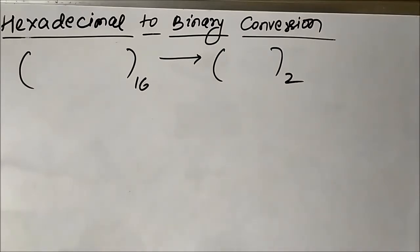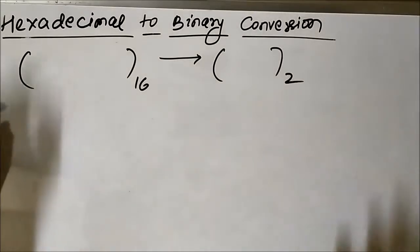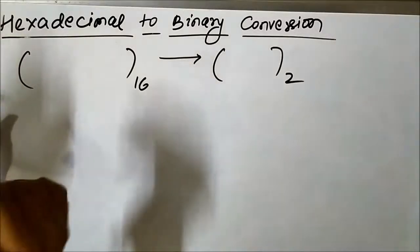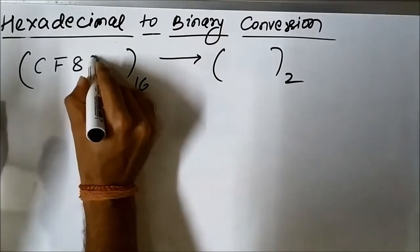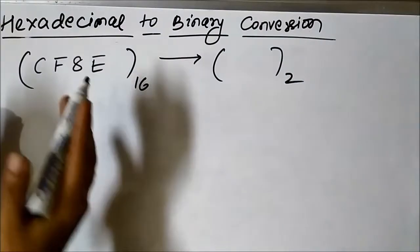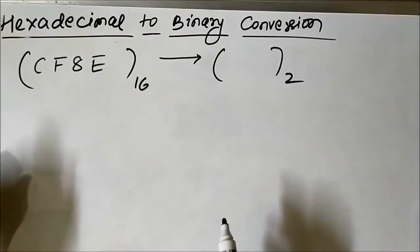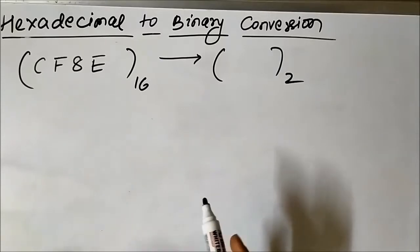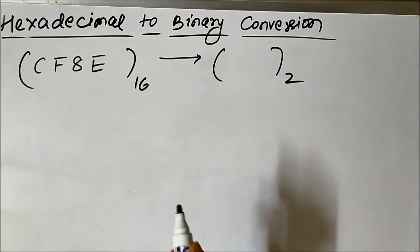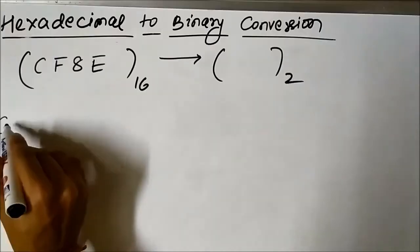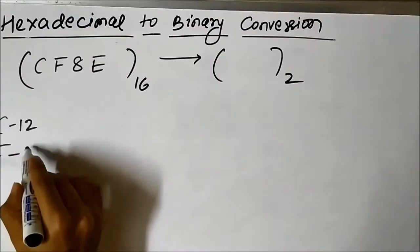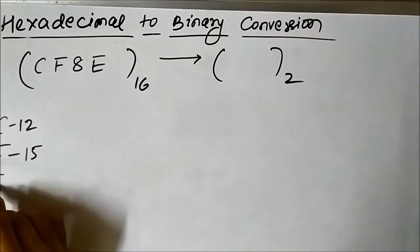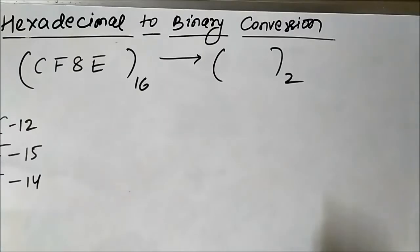Let us take another example. Consider the hexadecimal number CF8E, which we have to convert into binary form. Before that, we must know that C stands for 12, F stands for 15, and E stands for 14 in the alphanumeric hexadecimal number system.